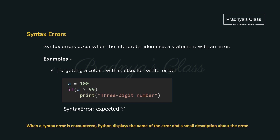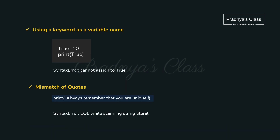Let's first go through syntax errors. Look at the example — here syntax is wrong because a colon is missing. These types of errors are identified by the Python interpreter, which gives the name of the error and a description. Here, 10 is initialized to a keyword, which is invalid. In another example, double quotes are missing. Python interpreter gives a description so we can rectify and correct it.